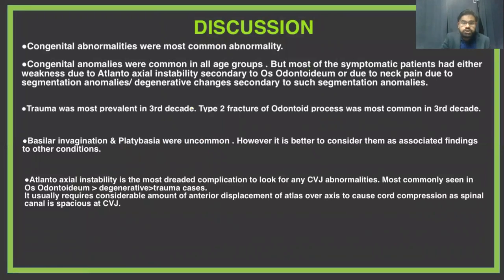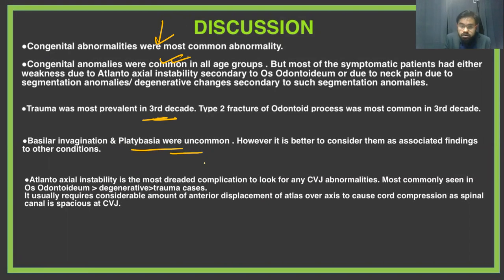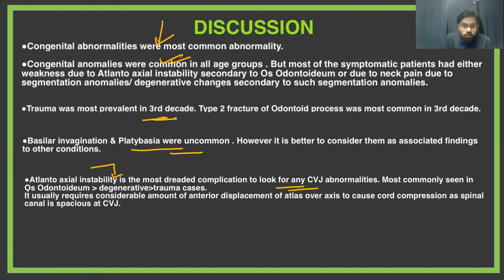Coming to the discussion: congenital abnormality was the most common and was present across all age groups. Trauma was prevalent in the third decade, and basilar invagination and platybasia were not as common compared to os odontoideum. Atlanto-axial instability is the most dreaded complication to look for in CVJ abnormalities, and the most common cause was os odontoideum, followed by degenerative changes, followed by trauma.